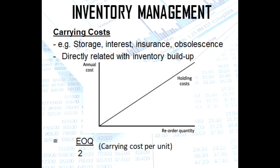Carrying costs — examples include storage costs, interest, insurance, and obsolescence. It is directly related with inventory buildup. As you can see in the graph, as the number of units increases, your holding costs or carrying costs increase because you need additional space in your warehouse, which entails rent, and rent translates into additional costs.